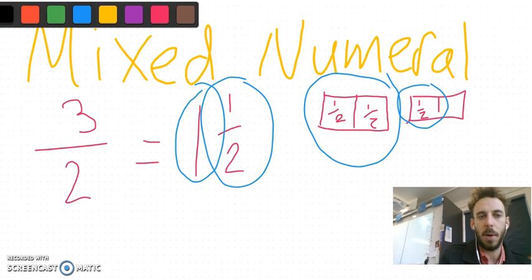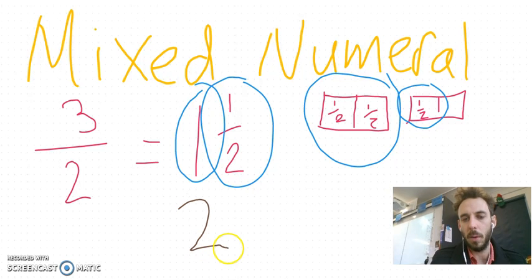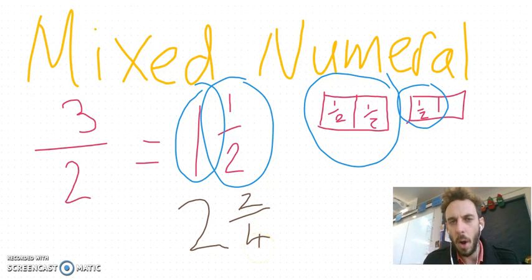So mixed numeral incorporates both. It has whole numbers and it has fractions. Another mixed numeral, you might have two wholes but two fourths. I hope that makes sense. I hope you can see how that works.